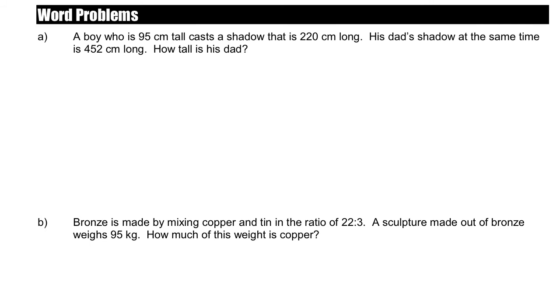So on the back of the page, I've got some word problems, so we can practice using proportions to solve problems. A boy who is 95 centimeters tall casts a shadow that is 220 centimeters long. His dad's shadow at the same time is 452 centimeters long. How tall is his dad? So if you read through the question, you'll notice there's a comparison. There's a ratio between the height of the person and the length of their shadow. So we know the boy's height, and we know the boy's shadow length. We're told what the dad's shadow length is, but we don't know the dad's height.